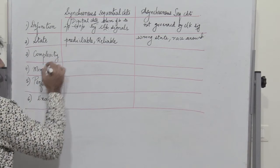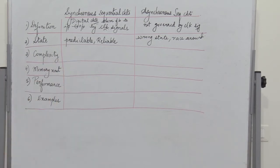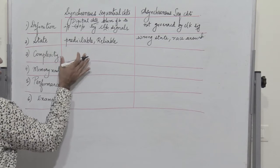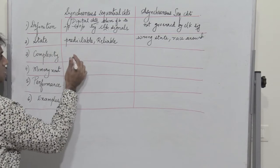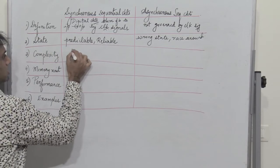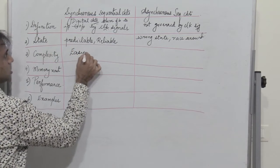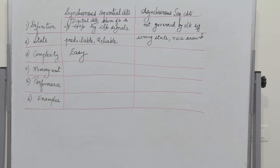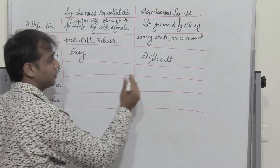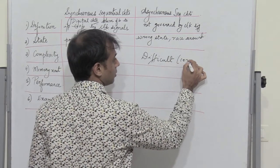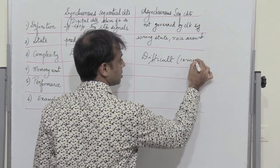Therefore, the states of an asynchronous sequential circuit are not predictable and they are not very reliable. Now talking about complexity — it is pretty easy to design synchronous sequential circuits, whereas asynchronous sequential circuits are quite difficult to design, meaning that they are pretty complex.